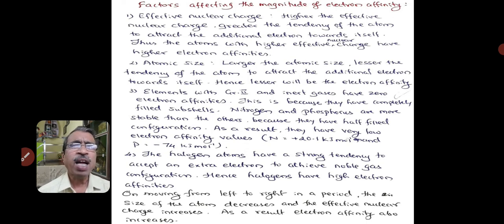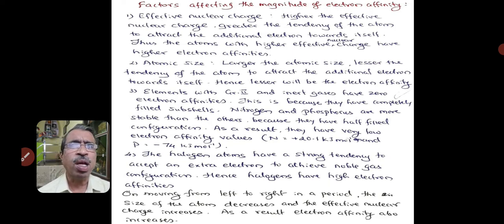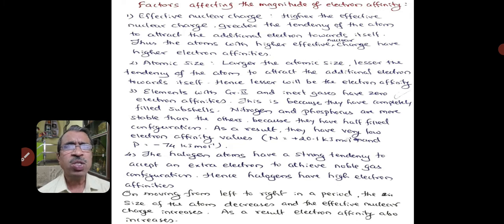Now coming to the factors affecting the magnitude of electron affinity. The first factor is effective nuclear charge. Higher the effective nuclear charge, greater the tendency of the atom to attract the additional electron towards itself. Thus, atoms with higher effective nuclear charge have higher electron affinities.